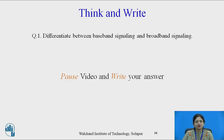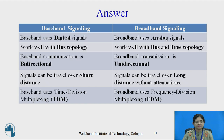Now pause the video, think about this question, and write down the answer: differentiate between baseband signaling and broadband signaling. Baseband uses digital signals, whereas broadband uses analog signals. Baseband works well with bus topology; broadband works well with bus entry topology. Baseband communication is bidirectional, whereas broadband is unidirectional. Baseband signals travel over short distances; broadband covers long distances. Baseband uses TDM, whereas broadband uses FDM — Frequency Division Multiplexing.